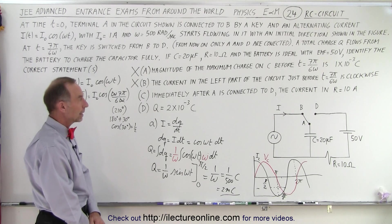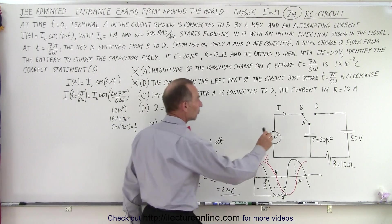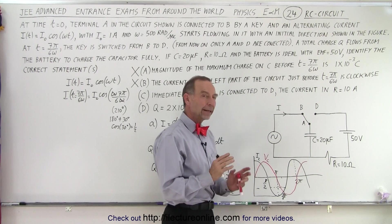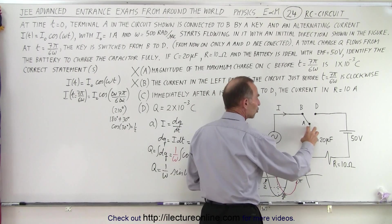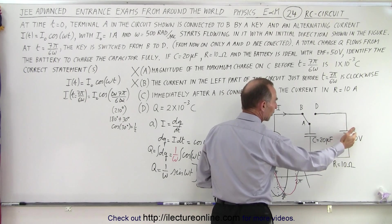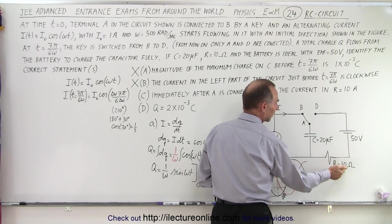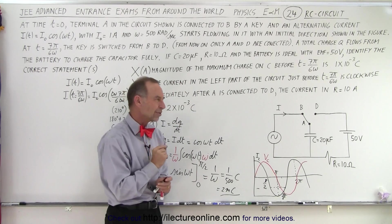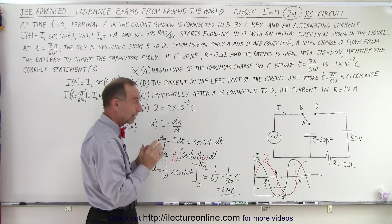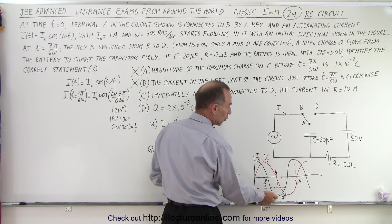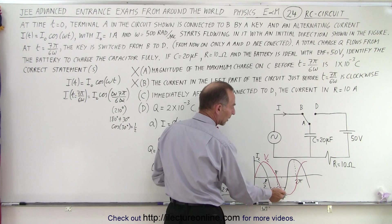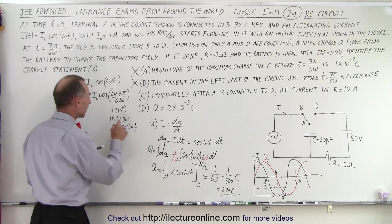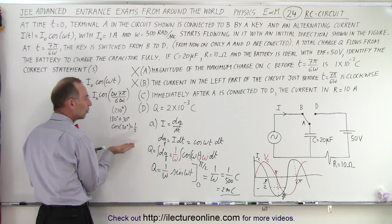Next, immediately after A is connected to D, so as soon as we change position to there, the current in R equals 10 amps. Now, the danger here is to not assume there's any charge on the capacitor, and we simply use Ohm's law, and we go I equals V over R, and 50 volts divided by 10 ohms is 5 amps, so we would say that C is wrong. But that's not entirely true. It may be true, but think again. At the time that we switch, notice the charge on the capacitor is halfway to its maximum value.